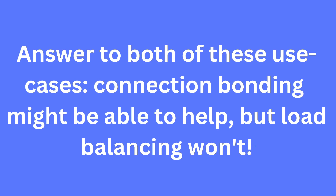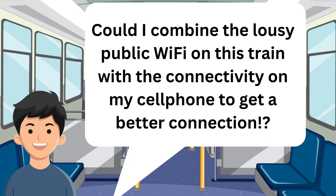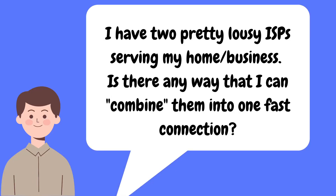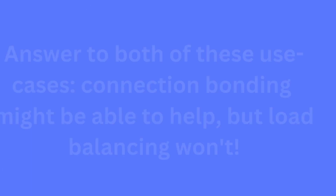The answer to both of these use cases would be connection bonding — if it can help, this is what you need, and not load balancing. The guy on the bus thinking can I use public Wi-Fi plus a cell phone, or the person in the more common scenario where there are only two undesirable internet connections in their locality — is there any way to combine those two into one?